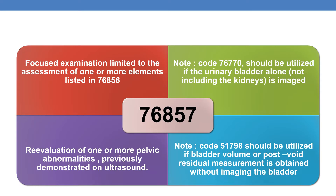Now coming to the elements required for assignment of 76857, which is the limited pelvic examination code. To assign 76857, you need a focused examination limited to the assessment of one or more elements listed in 76856, or for re-evaluation of one or more pelvic abnormalities previously demonstrated on ultrasound — that is, for follow-up visits, you need to assign the limited code.